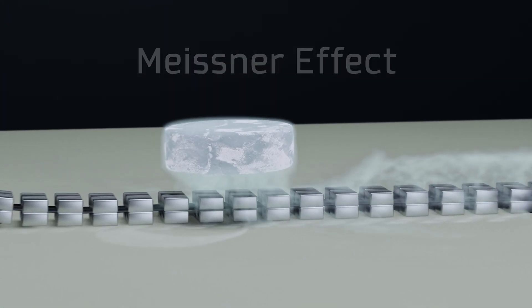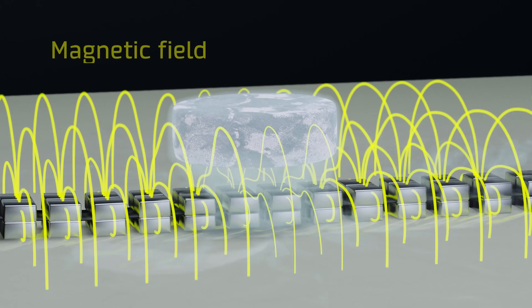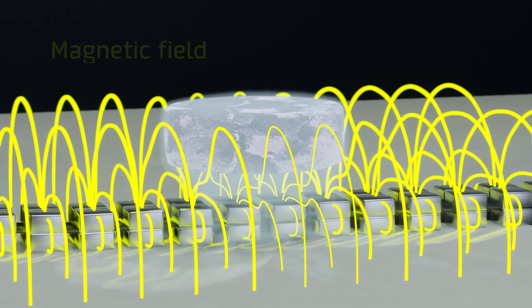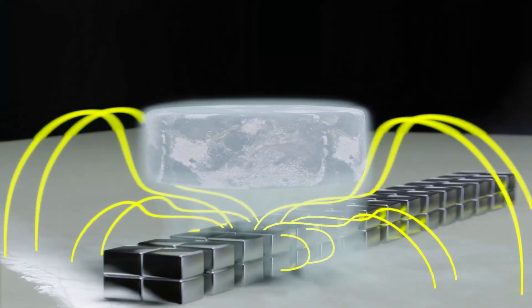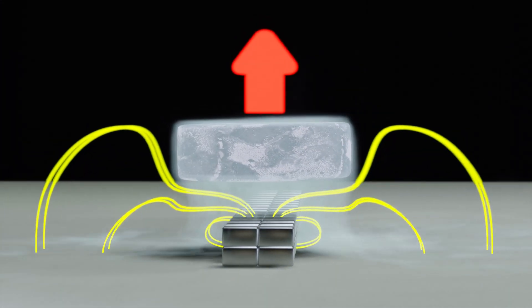First, the Meissner effect, which tells us that when a superconductor is in an area with a magnetic field, the magnetic flux inside the superconductor is cancelled, expelling it outwards and generating a repulsive force in the opposite direction.